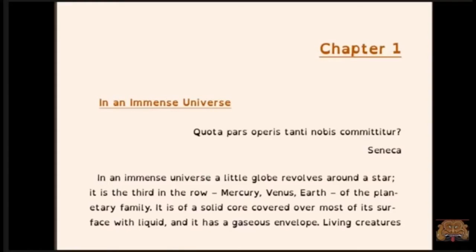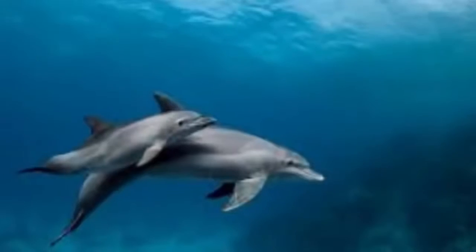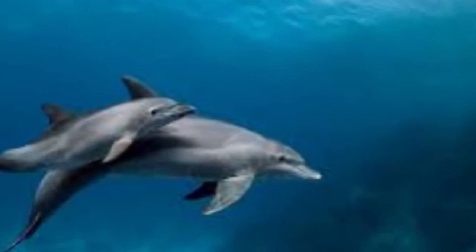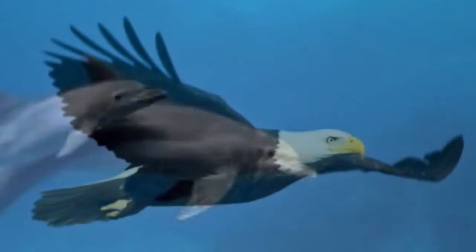In an immense universe, a little globe revolves around a star. It is the third star in a row: Mercury, Venus, Earth of the planetary family. It is of a solid core covered over most of its surface with liquid. It has a gaseous envelope. Living creatures fill the liquid. Other living creatures fly in the gas.